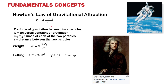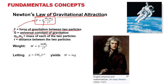Under Newton's second law there is also Newton's law of gravitational attraction. The formula involves F, the gravitational force between two particles; G, the universal constant of gravitation; m1 and m2, the masses of the two particles; and r, the distance between them.